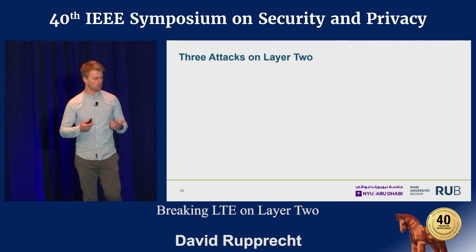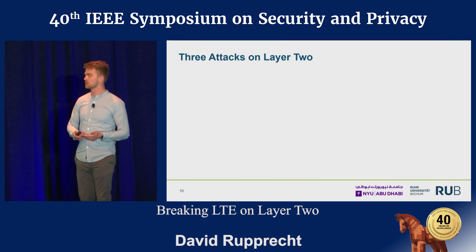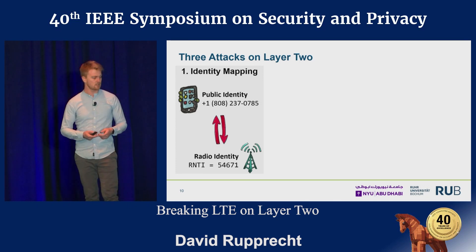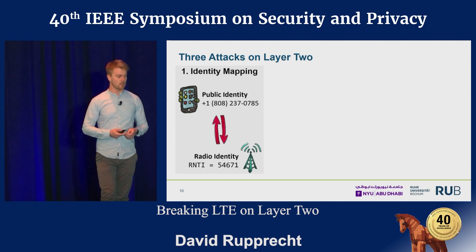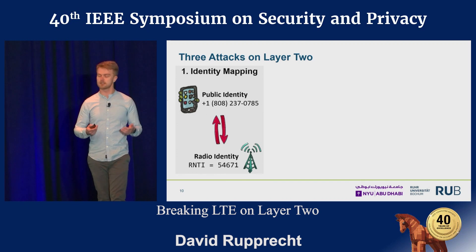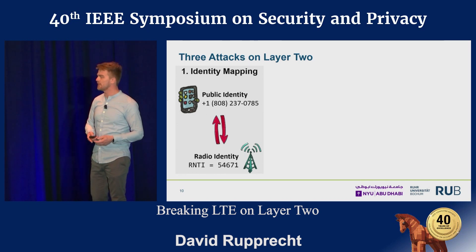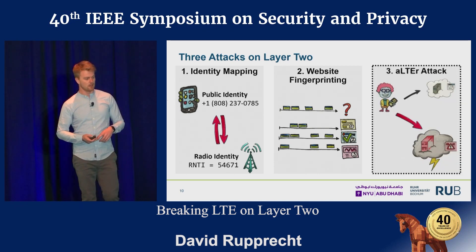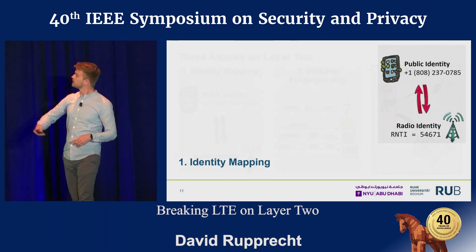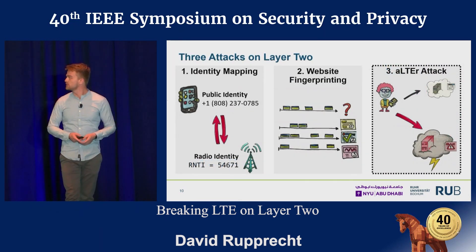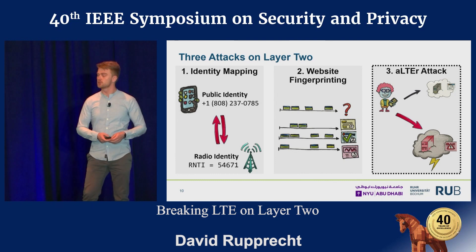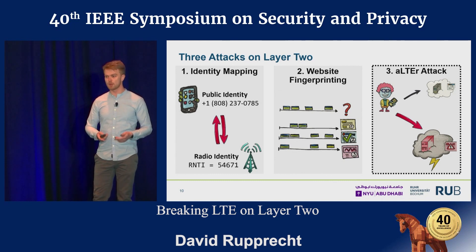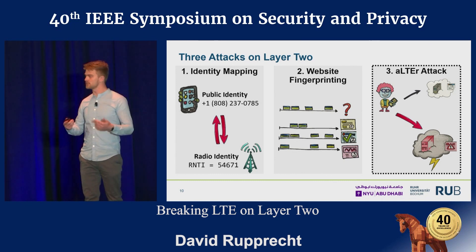Today I want to talk about three major attacks that can happen on layer two. First, an identity mapping attack, which allows us to use a public identifier and map it down to the radio identity. Second, we have metadata on layer two that allows website fingerprinting. And third, I want to introduce the alter attack, which allows us to redirect the victim to a malicious website due to missing integrity protection.